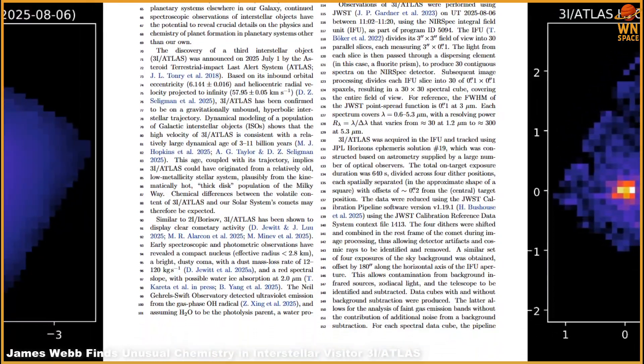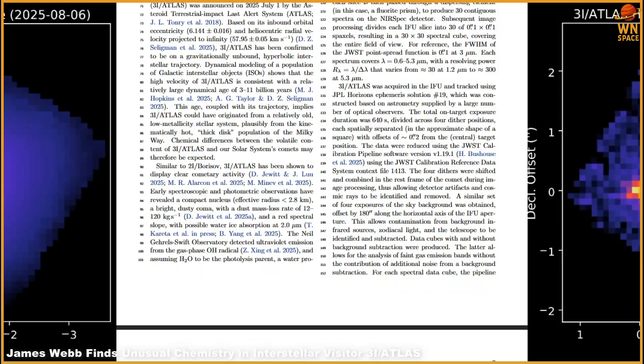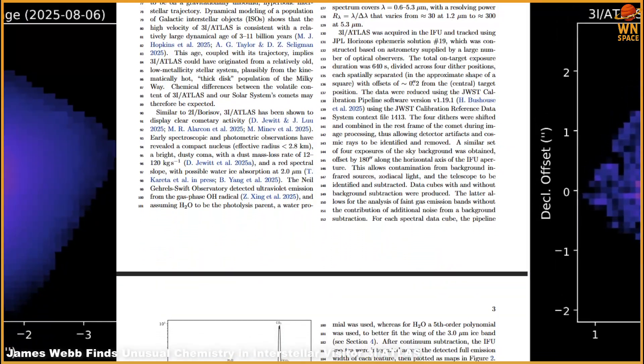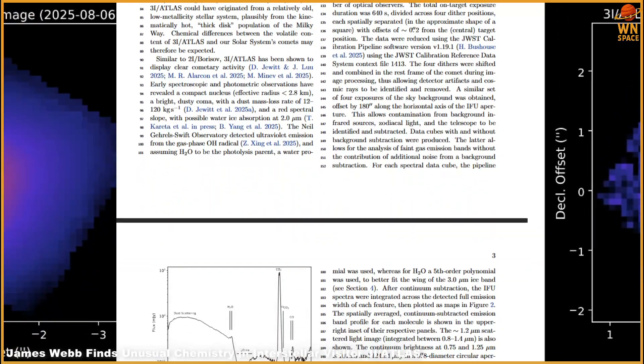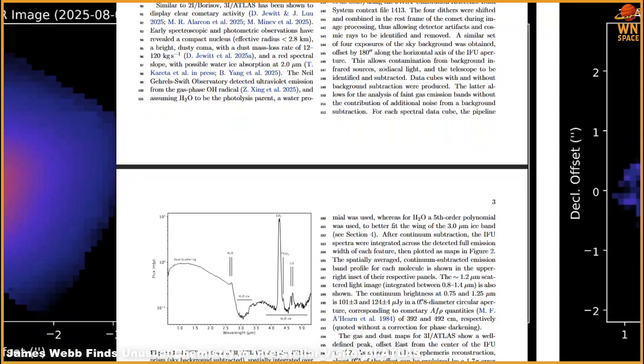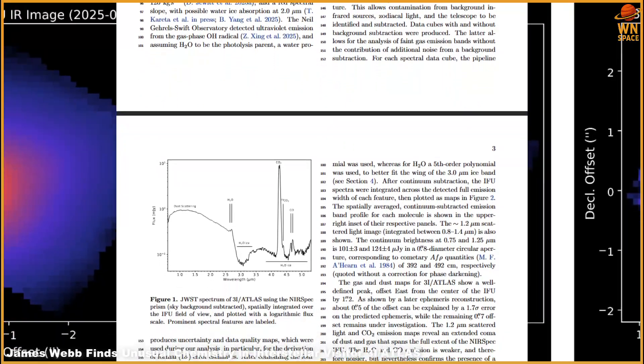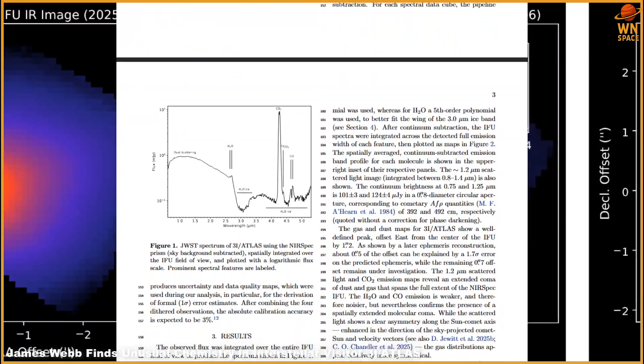But the most exciting data came from the James Webb Space Telescope. On August 6th, Webb's NEAR-Spec instrument studied 3I Atlas in detail, analyzing its light across infrared wavelengths. What it revealed shocked astronomers.